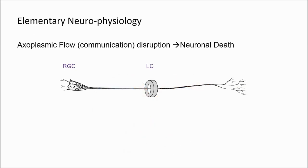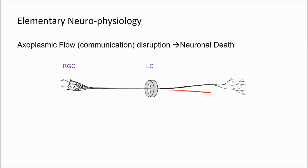Before discussing the optic disc, let's go over some elementary neurophysiology. The neurons in the central nervous system survive by communication with each other — if they don't communicate, they simply die. Communication inside the neuron is bidirectional: anterograde from the soma through axoplasmic flow to the synapse, then through the synapse to the next soma, and retrograde in the opposite direction.